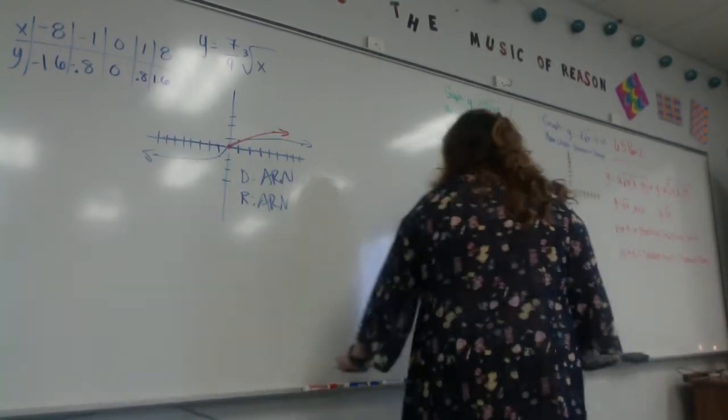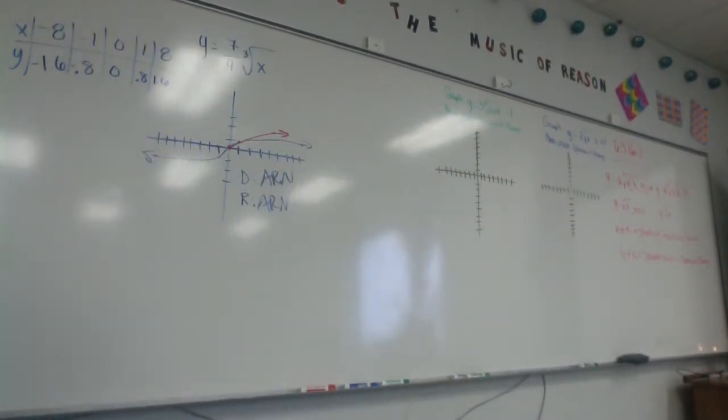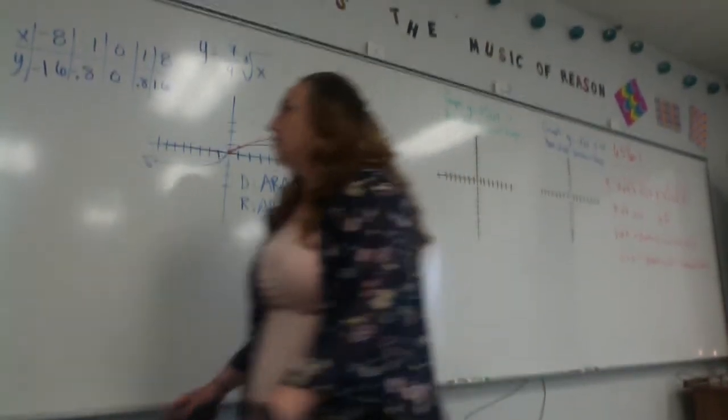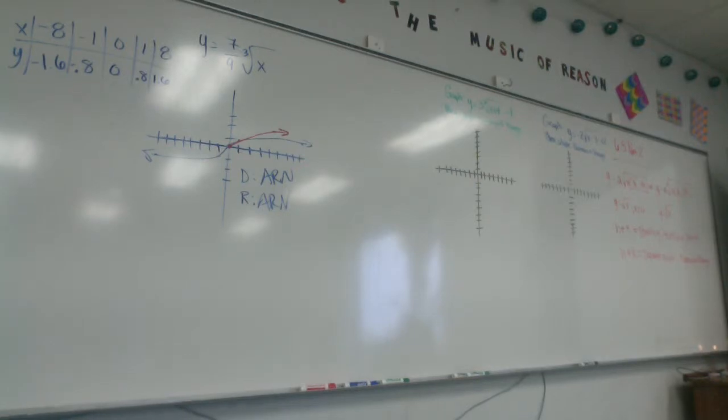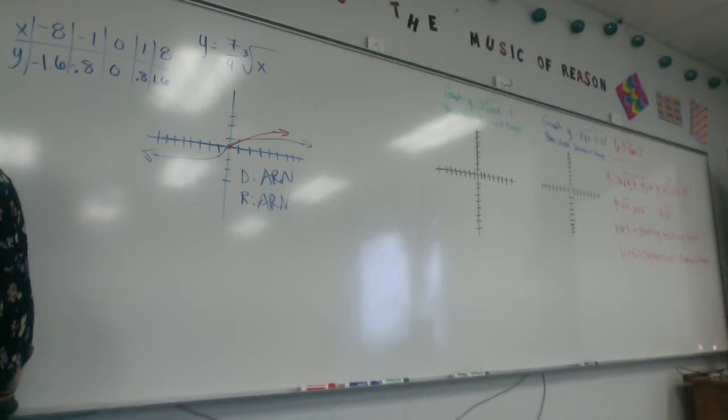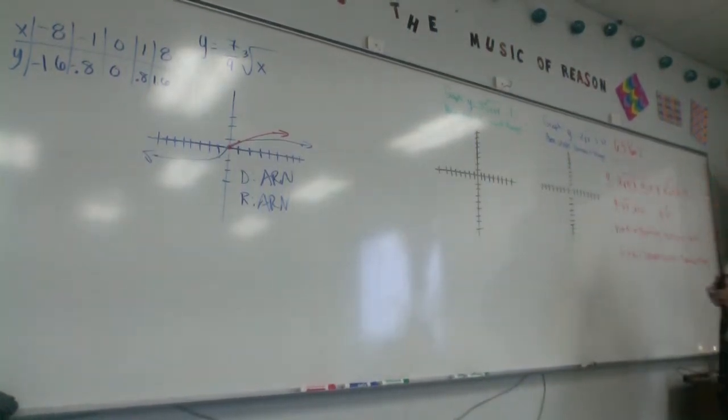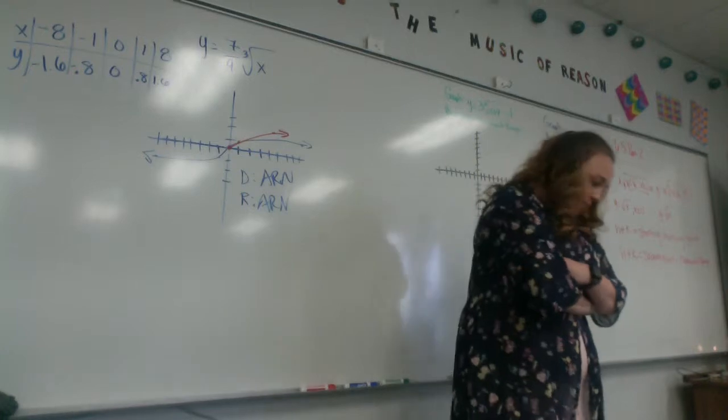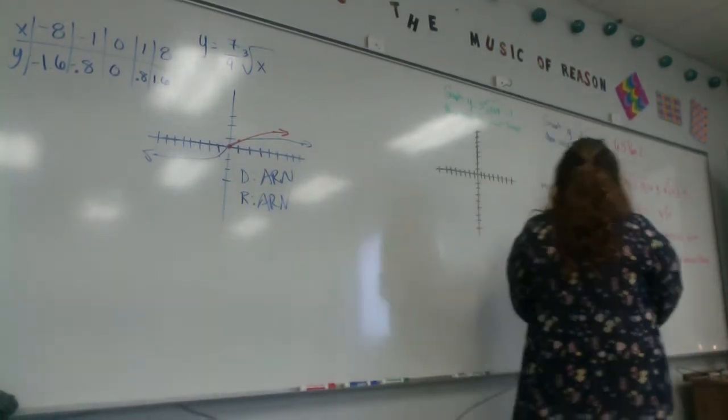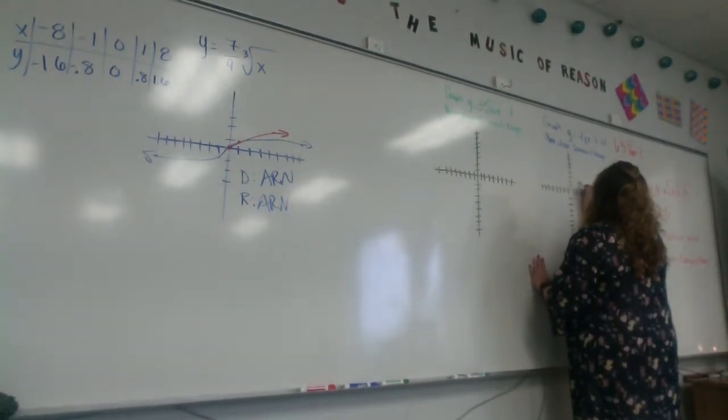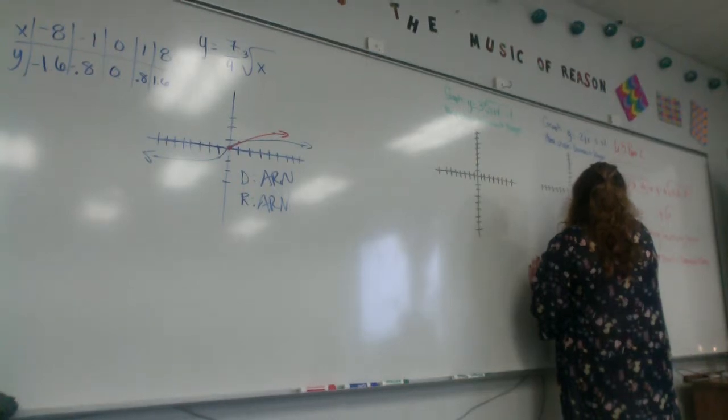We're going to graph two of them. So if I want to graph this function right here, y equals negative 2 times the square root of x minus 3 plus 2, where is my starting point? Your starting point, it's going to be 3, 2. Yes, it's 3, 2. My starting point is 3, 2. It's opposite of this, and this stays the same. So 3, 2 is a point I'm going to graph. That means my graph shifted from the original origin to the right 3 and up 2.